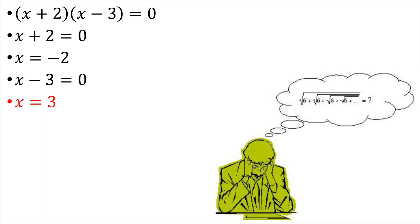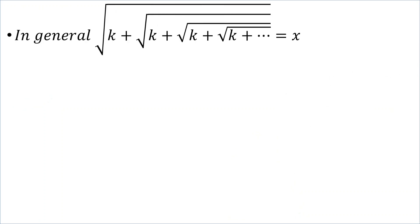Did you get it right? Now, let's go for a little bit extra. Let's say we had, in general, the square root of k plus the square root of k and so on and so forth, that infinite nested radical. Let that be equal to x.